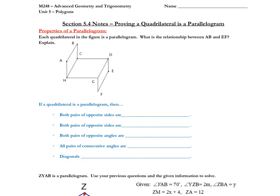So, properties of a parallelogram. It says each quadrilateral in the figure is a parallelogram — what is the relationship between AB and EF? Let's go ahead and highlight those segments so we know which ones we're talking about. Basically, it's all the properties of a parallelogram. What do we know? Both pairs of opposite sides are congruent.